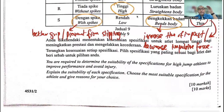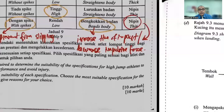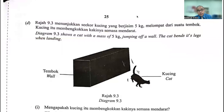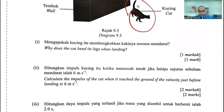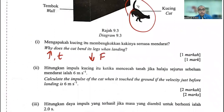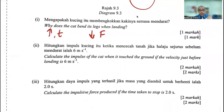Diagram 9.3 shows a cat of mass 5 kg jumping off a wall. The cat bends its legs when landing. Why? By now everyone should know this: to increase the time of impact and to decrease the impulsive force.